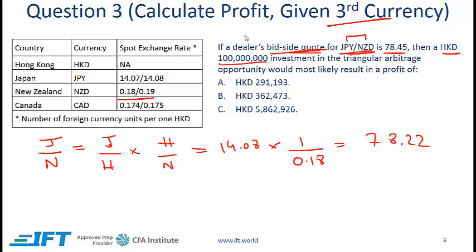Given what we are being asked, we need to ignore the Canadian dollar. On your exam you might be given a table like this and there will be another question that uses the Canadian dollar, but for this particular question we do not need it. We've done step number one: come up with the implied interbank offer rate of 78.22.